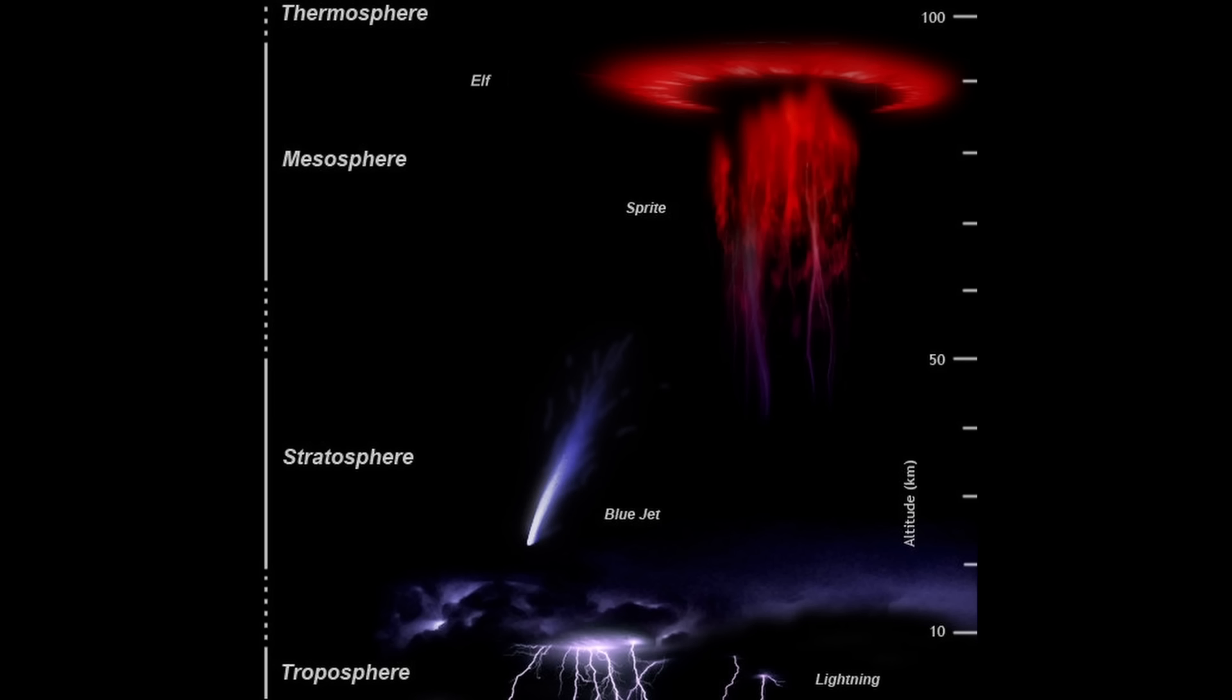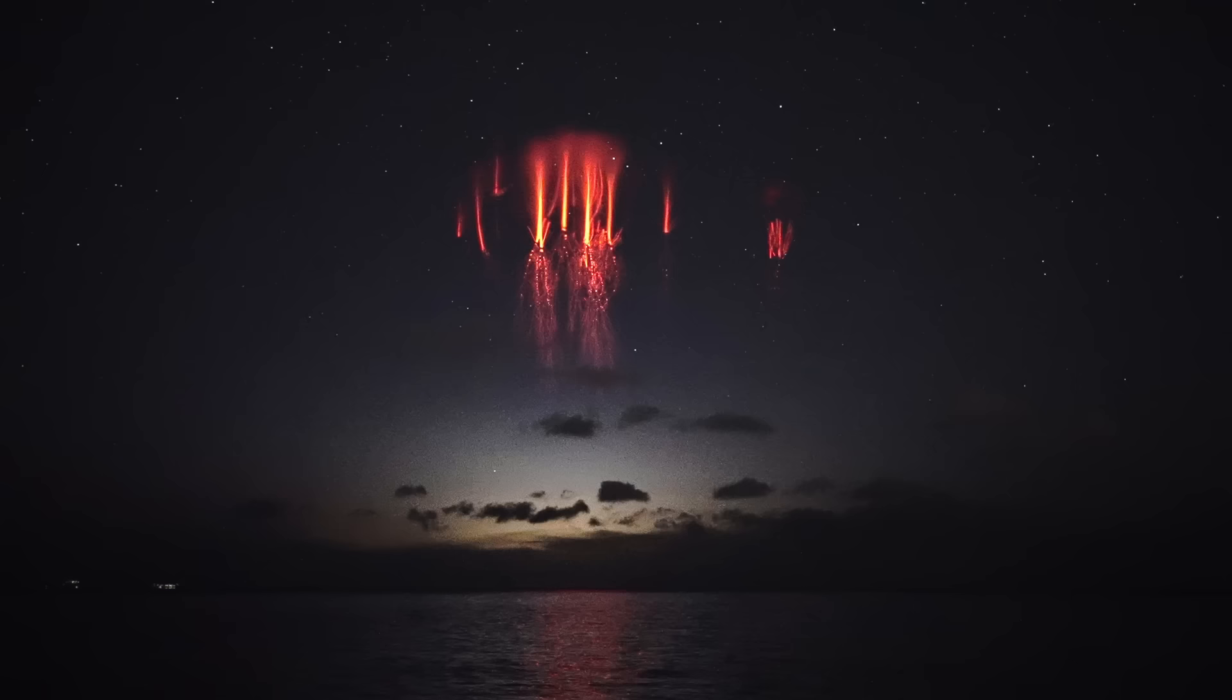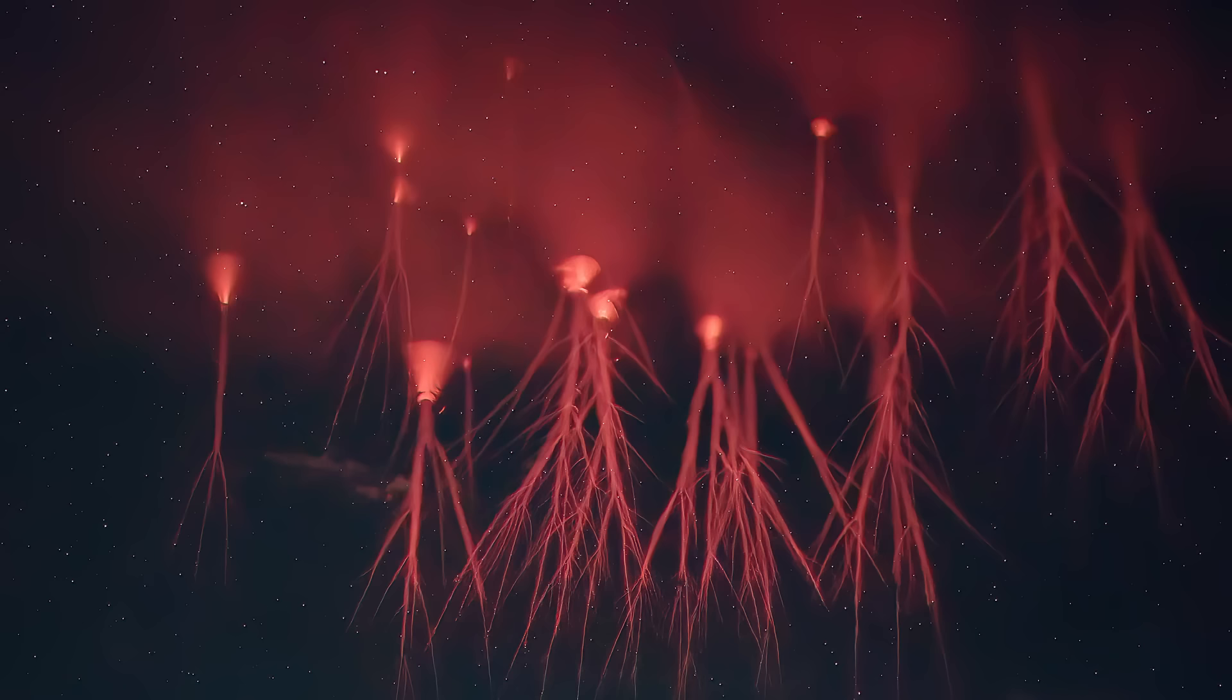Sprites are captivating luminous electrical discharges in the upper atmosphere, which are born from intense cloud-to-ground lightning. First captured in images in the 1990s, these phenomena have since graced thunderstorms worldwide. Much like lightning, sprites manifest as a double-ended tree, extending in opposite directions from their point of origin.